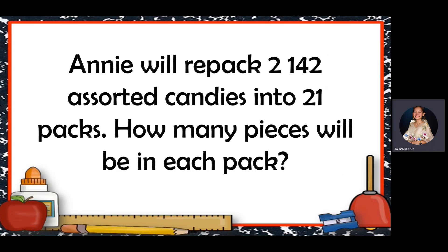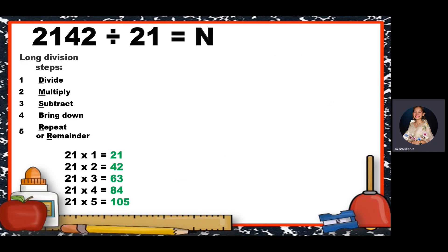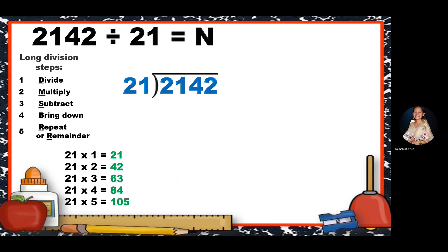So the first problem: Anna will repack 2,142 assorted candies into 21 packs. We circle the numbers: 2,142 and 21 packs. The question is: how many pieces will be in each pack? The clue word is 'each.' Since we have the clue word, we need to find out how many candies are in each pack — that means this problem is division. So we have 2,142 divided by 21; the higher number goes inside the division house and the smaller number outside.